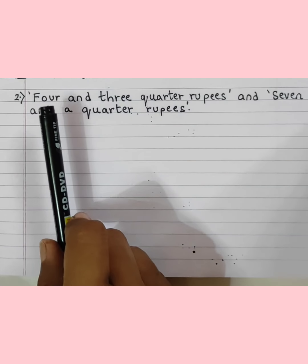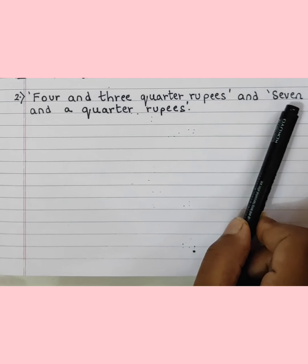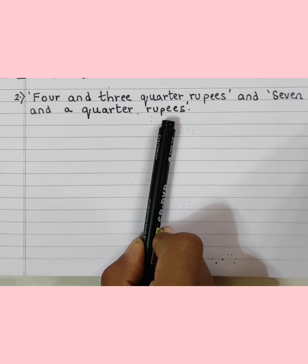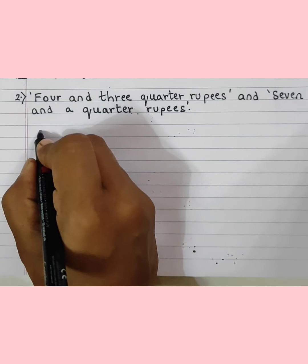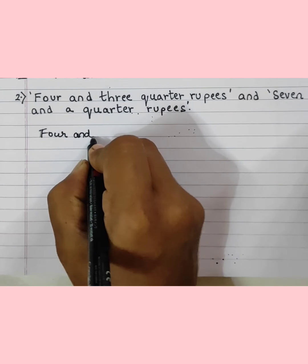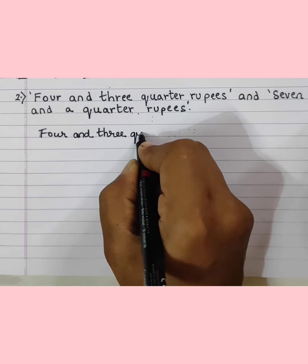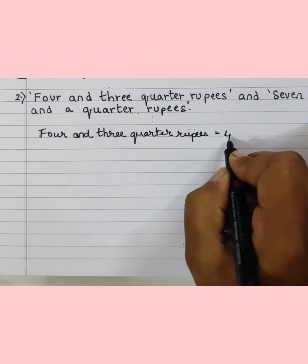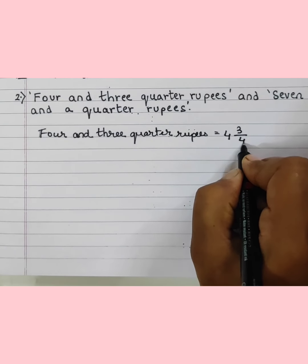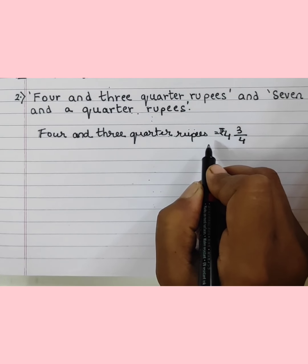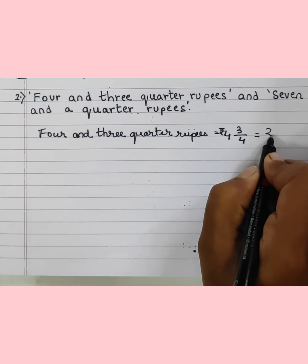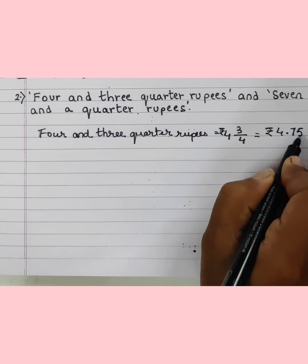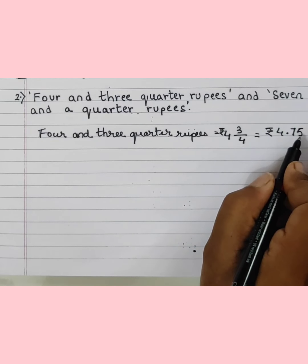Second question: 4 and 3 quarter rupees and 7 and a quarter rupees. We have to write this in decimal fraction and then add them. First, 4 and 3 quarters — 3 quarter means 3 upon 4. Now 3 upon 4 equals 0.75, so we write 4.75 rupees.